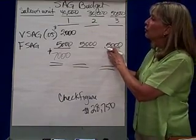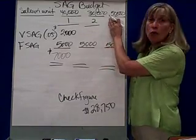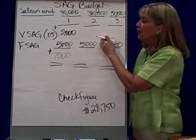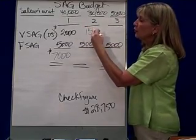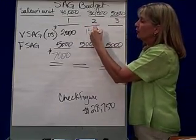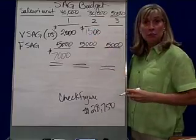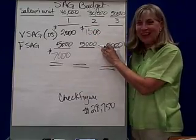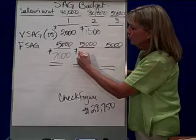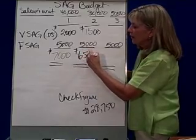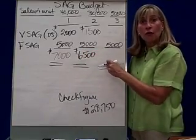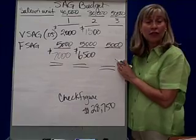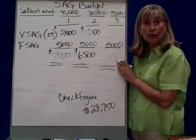In the second quarter, we sold 30,000, so 30,000 times five cents is $1,500 for variable selling, administrative, and general. $5,000 is fixed, so in total, we budget $6,500 for variable and fixed selling, administrative, and general.